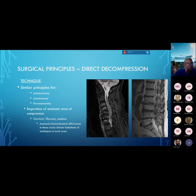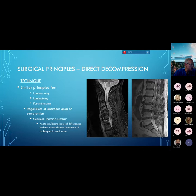The principles of direct decompression are similar regardless of what we do from the back. A laminectomy is removal of the entire back arch of the spine — the lamina. A laminotomy is essentially an opening in that same structure to make room for a nerve while preserving more of the normal bony and ligamentous anatomy. Foraminotomies decompress the exiting holes for the nerve. The principle is the same: creating more room for the exiting or traversing neural structure. Similar principles apply whether we're working cervical, thoracic, or lumbar.